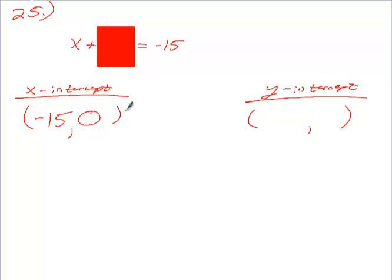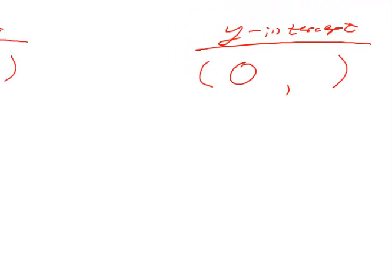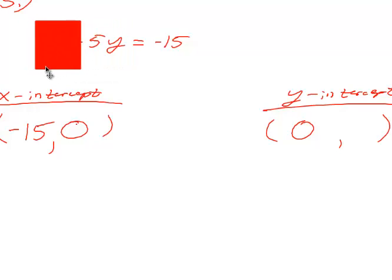Everybody okay with that? So when do Y-intercepts happen? When it crosses the Y-axis. So what's the X-coordinate anywhere on the Y-axis? Zero. So Y-intercepts happen when X equals zero. So this time cover up the X-term. What do I have to do to get Y by itself? Divide by 5. What's negative 15 divided by 5? Negative 3. There's your intercepts — done and done.